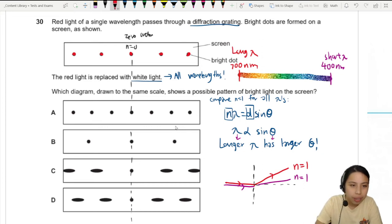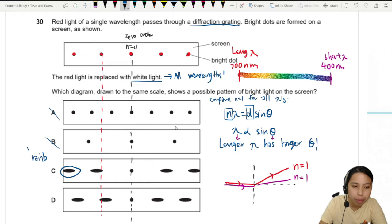So if we have red just now, let's draw a line down. Red should be, we're gonna have a spread out. So A and B is definitely not going to be it. For the rest, you do get this kind of spreading where this will be what we see, a rainbow color.